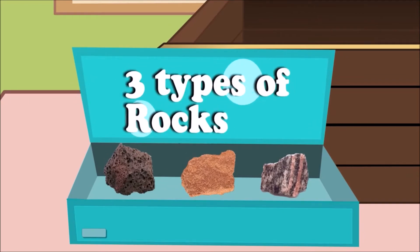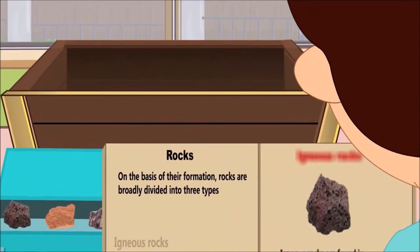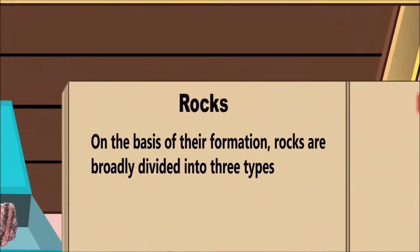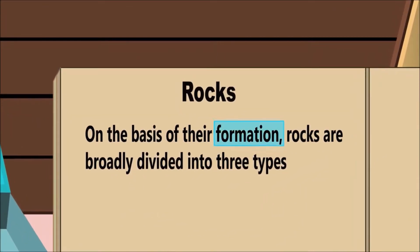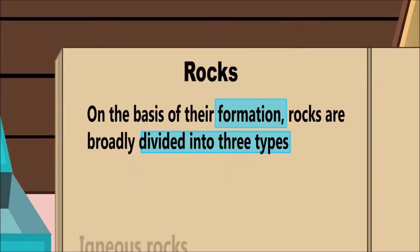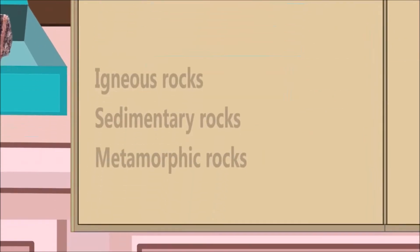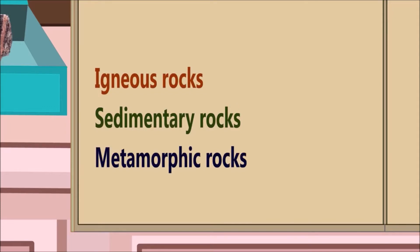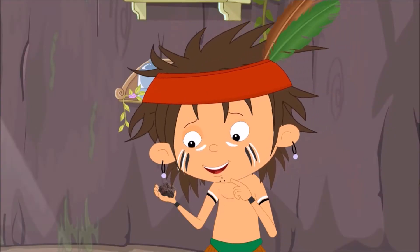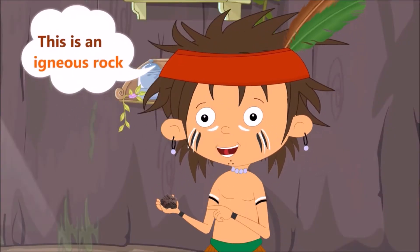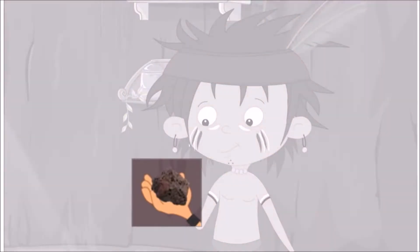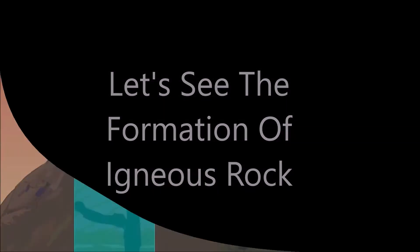Types of rocks: on the basis of formation, rocks are broadly divided into three types — igneous rock, sedimentary rock, and metamorphic rock. Let's see how igneous rocks are formed.